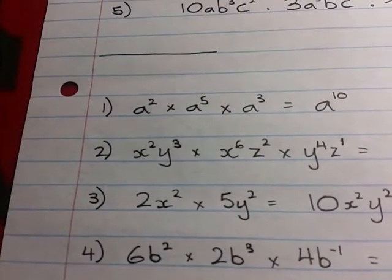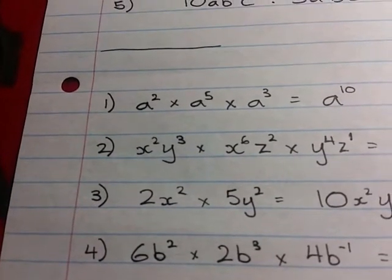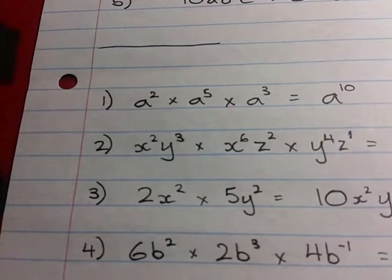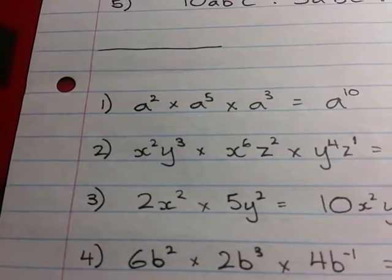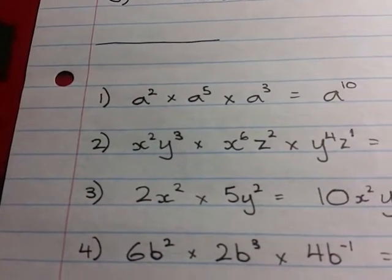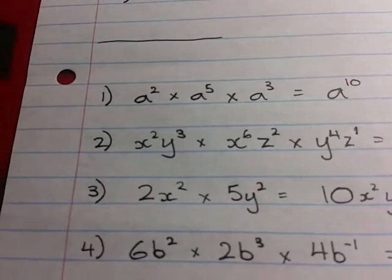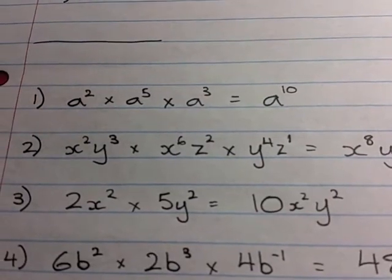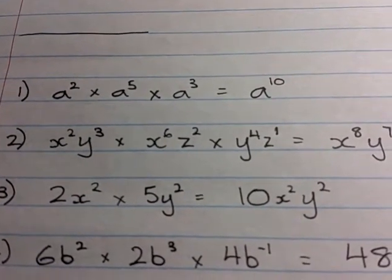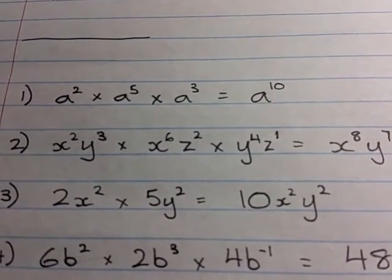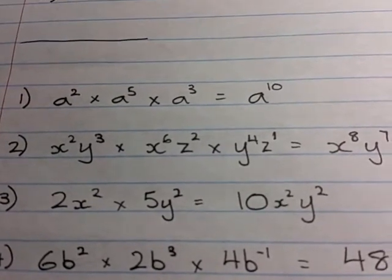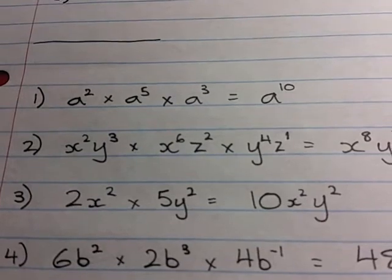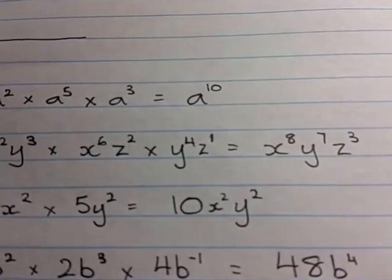6b squared times 2b to the 3 times 4b to the negative 1. Numbers multiply like normal, so 6 times 2 times 4 will give you 48. And then b to the 2 times b to the 3 gives you b to the 5. b to the 5 times b to the negative 1, 5 plus negative 1 will give you b to the 4.